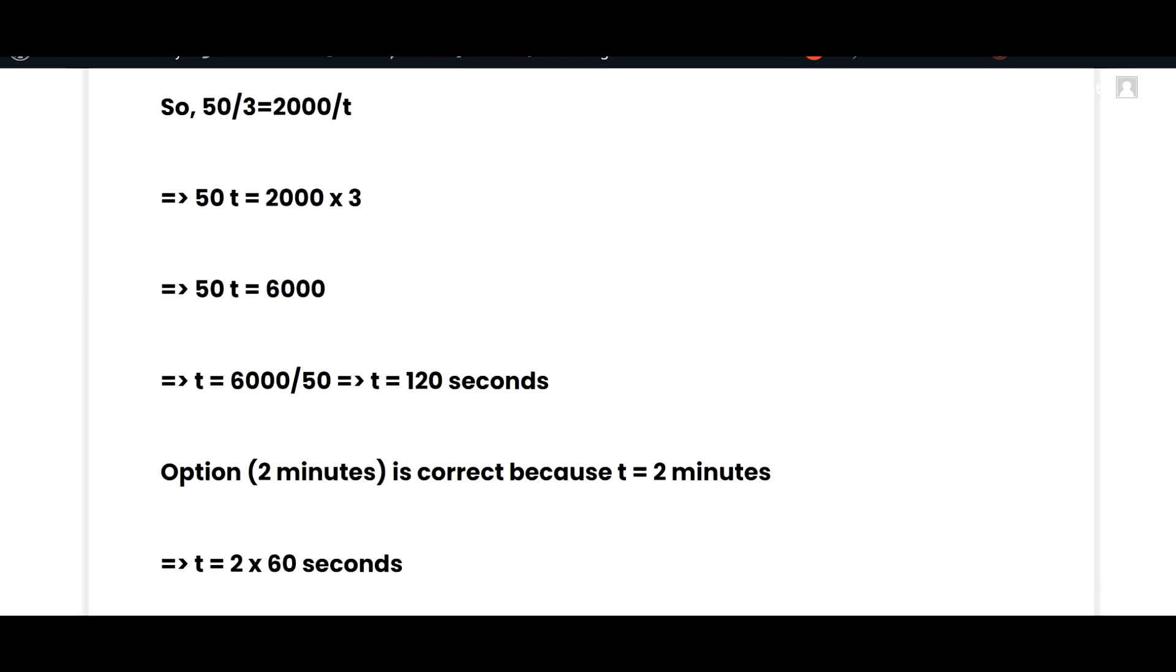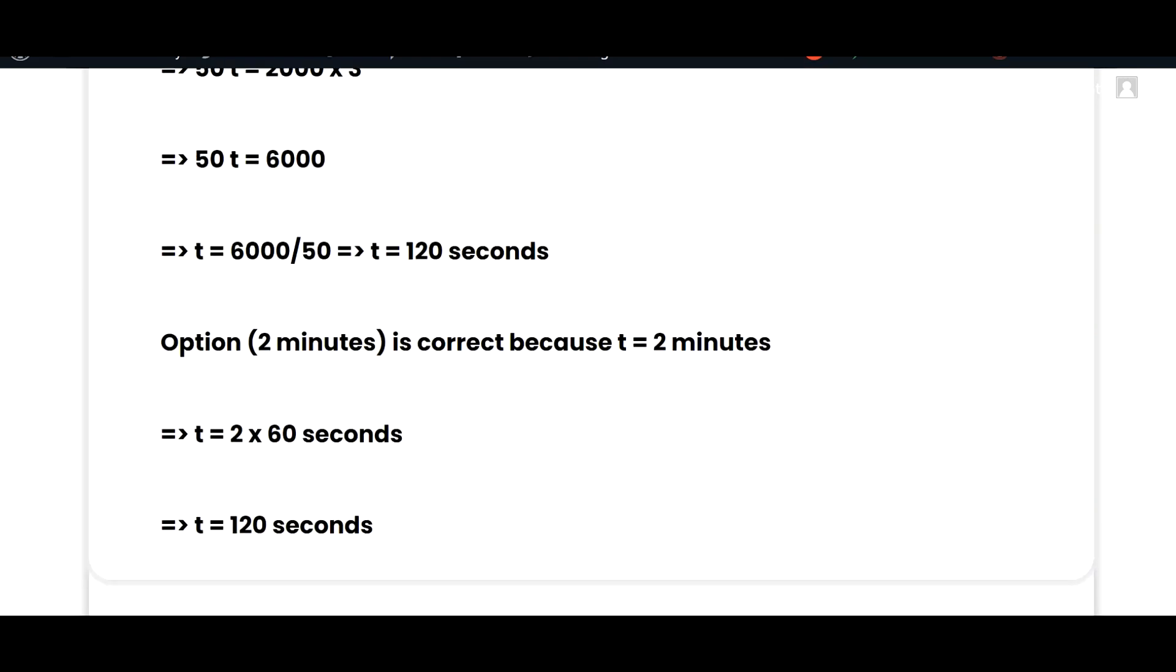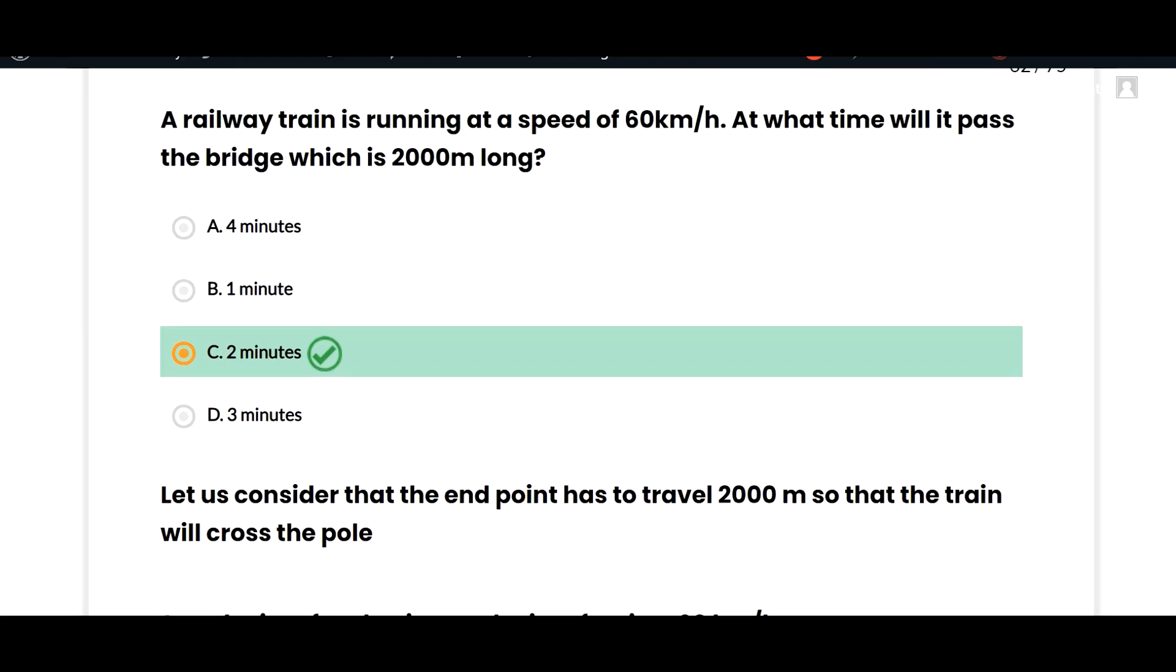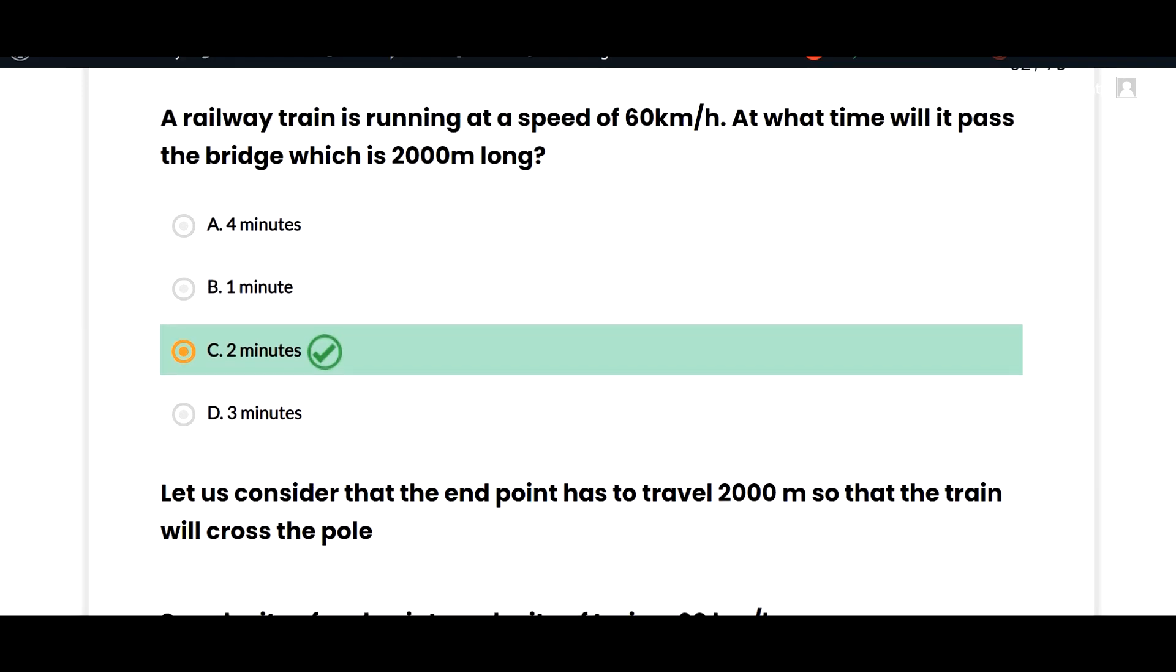So very simple: t equals 2 minutes, and 1 minute equals 60 seconds, so 2 multiplied by 60 gives 120 seconds. Therefore, 2 minutes is the correct option. So in this MCQ, option C is correct.